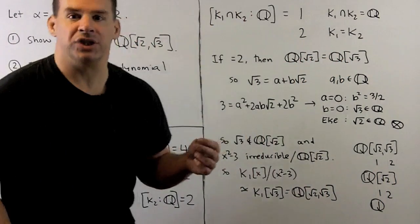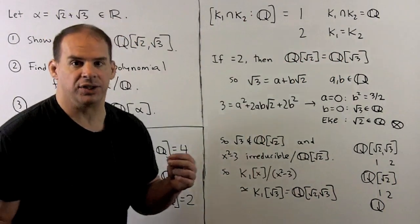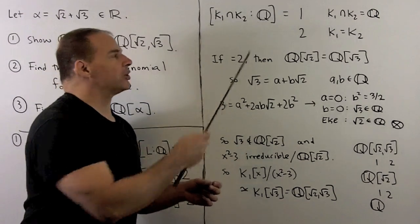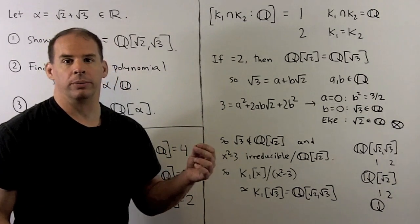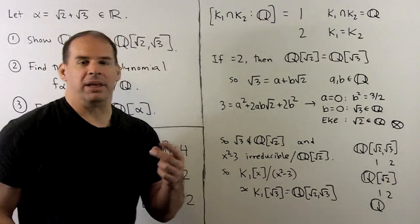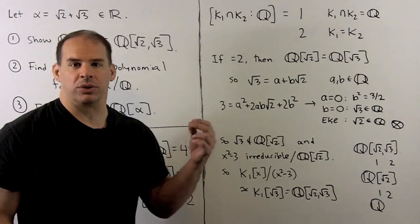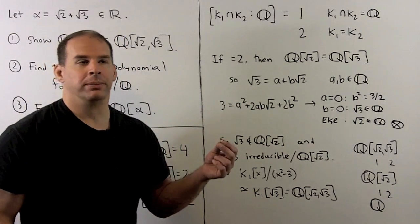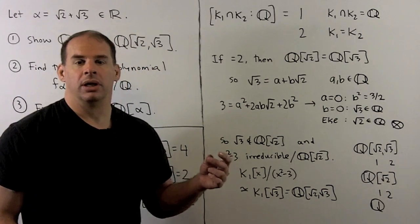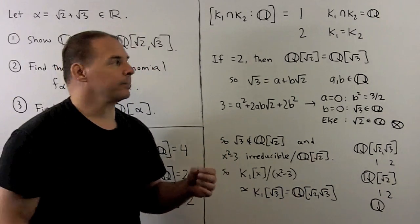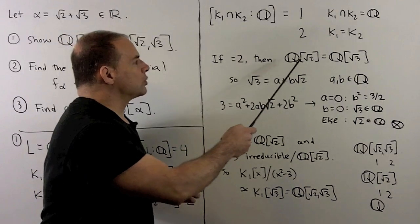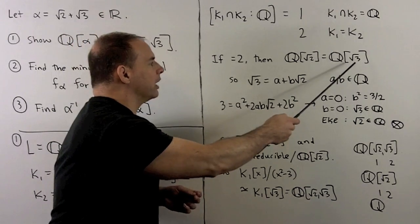Now, if we consider the intersection of K1 and K2, the possibilities for the degree of the intersection over the rationals are either 1 or 2. In the first case, that means K1 intersect K2 is equal to the rationals. In the second case, we'll have that K1 is equal to K2. So let's show that that cannot happen.